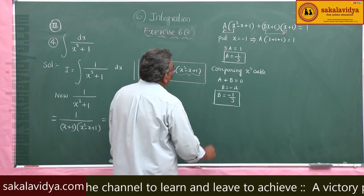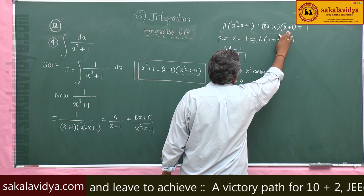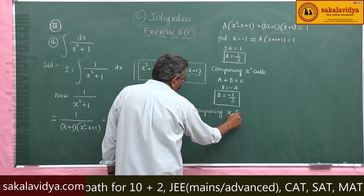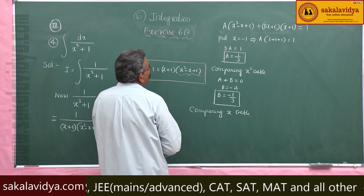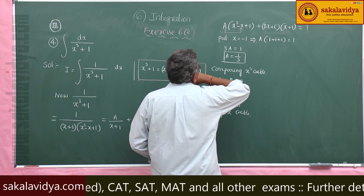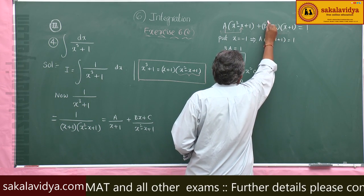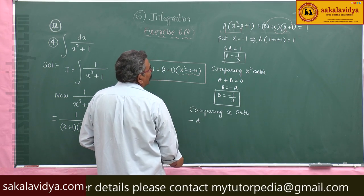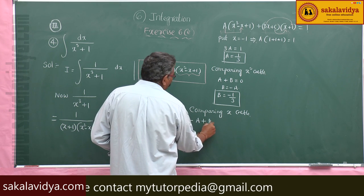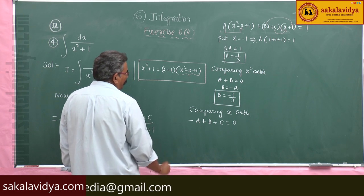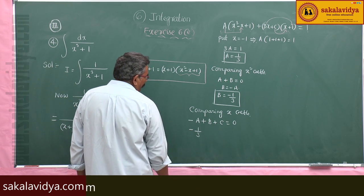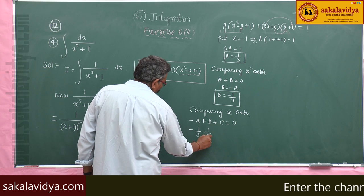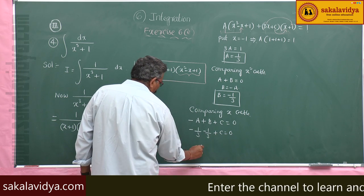Now comparing x coefficients: from A into minus x we get minus A, and from Bx plus C into x plus 1 we get B and C terms. So minus A plus B plus C equals 0. With A equals 1 by 3 and B equals minus 1 by 3: minus 1 by 3 minus 1 by 3 plus C equals 0, so C equals 2 by 3.